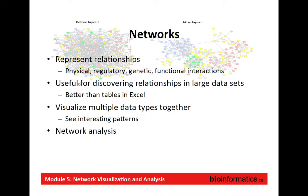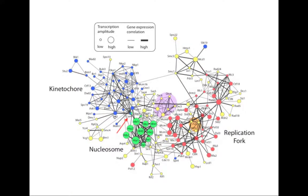Networks are useful for discovering relationships in large data sets — much easier than finding relationships in tables. They're very useful for visualizing multiple types of data together: you can have a network and overlay different types of information to see how they're related, and of course for network analysis. This is an example from the pre-reading — the primer on how to interpret biological networks — where we have a lot of different information overlaid on a network.